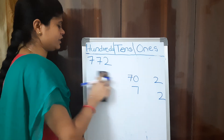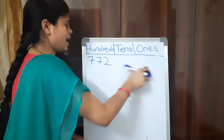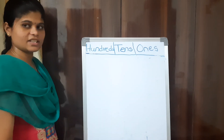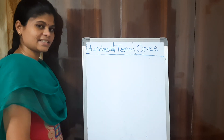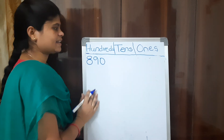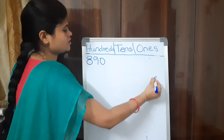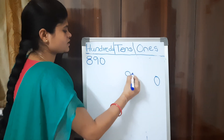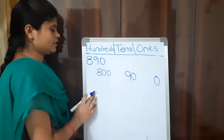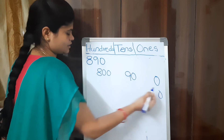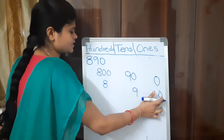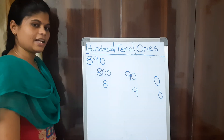Next example: 890. How to write 890 in place values? We have 0 ones, 9 tens (90), and 8 hundreds. In digits: 0 in 1s place, 9 in 10s place, 8 in 100s place. This is how we represent 890 in digits.